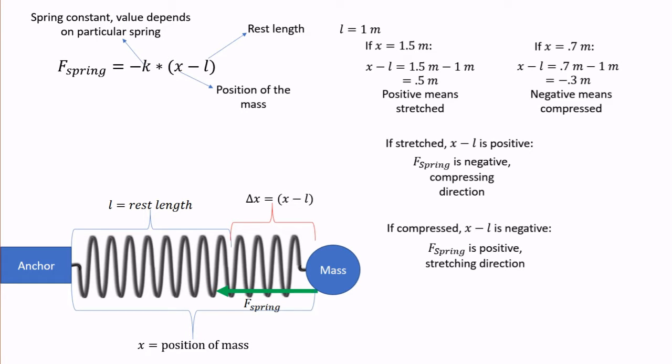Now, just a quick word about the k constant. Like many physical things, it has a unit. In this case, it has to have units that will convert a length into a force, since the quantity in parentheses is a length, and the quantity on the other side of the equation is a force. Therefore, the unit of the k constant is a newton per meter.